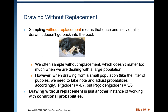Drawing with or without replacement — sampling without replacement means that once one individual is drawn, it doesn't go back into the pool. We often sample without replacement, which doesn't matter too much with a large population. If you have a thousand cards, drawing the first card has probability 1 out of 1000 and the next 1 out of 999 — for all practical purposes, the same.